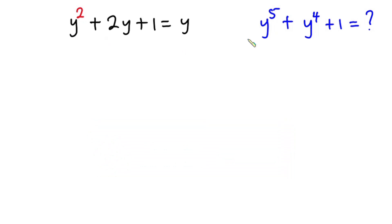Let's manipulate this one to generate this. So from here, I will equate everything to zero. So we have y to the second power plus 2y plus 1 minus y is equal to zero.